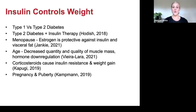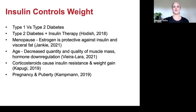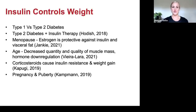Another example: when you have to take steroids — corticosteroids can cause insulin resistance and weight gain. Pregnancy and puberty: I gained close to 40 pounds with each of my pregnancies, and I certainly did not eat the caloric equivalent to gain 40 pounds. Research from 2019 tested insulin resistance throughout pregnancy and found you get more and more insulin resistant and gain more weight — great examples of insulin controlling weight.